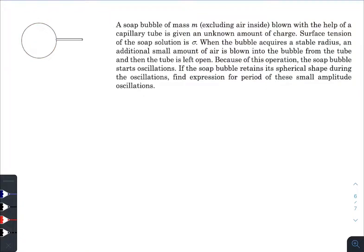When it has achieved an equilibrium situation, an extra amount of air is blown. Because of this operation, the soap bubble starts oscillation. If the soap bubble retains its spherical shape during the oscillation, find the expression for period of this small amplitude oscillation.